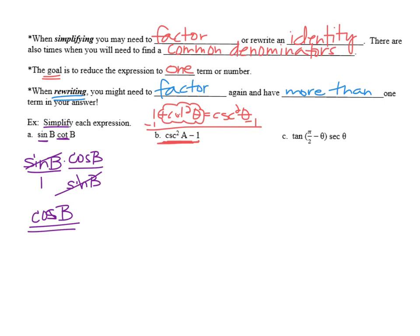Cosecant squared A minus 1 is going to equal cotangent squared A. So we're squaring the cotangent term for angle A. All right, let's try one more. Tangent of pi over 2 minus theta times secant theta.